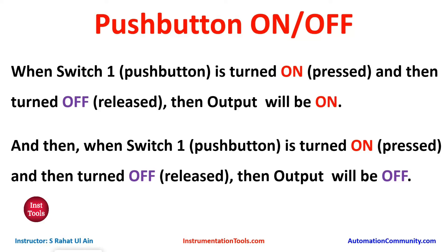When switch1 is turned on and then turned off, the output will be on. And then, when switch1 is turned on and then turned off again, the output will be off. So in this case, we are using only one push button — when pressed and released, output will be on; when pressed and released again, output will be off.